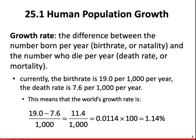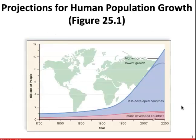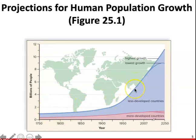Currently, the birth rate is roughly 19 per thousand per year. The death rate is 7.6 per thousand per year. That means the world's growth rate is 19 minus 7.6 divided by a thousand — roughly 1.1%. Each year the world's population is skyrocketing, growing at a rate greater than it was the year before.